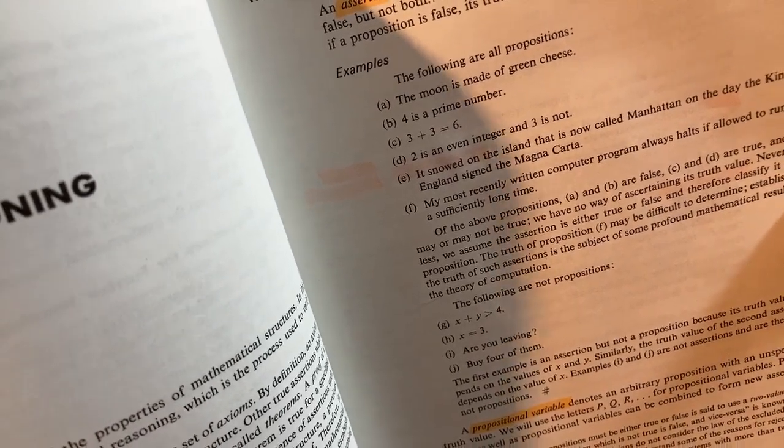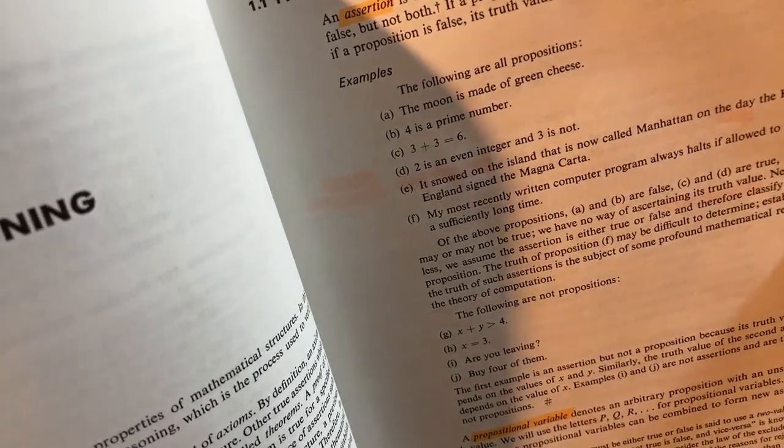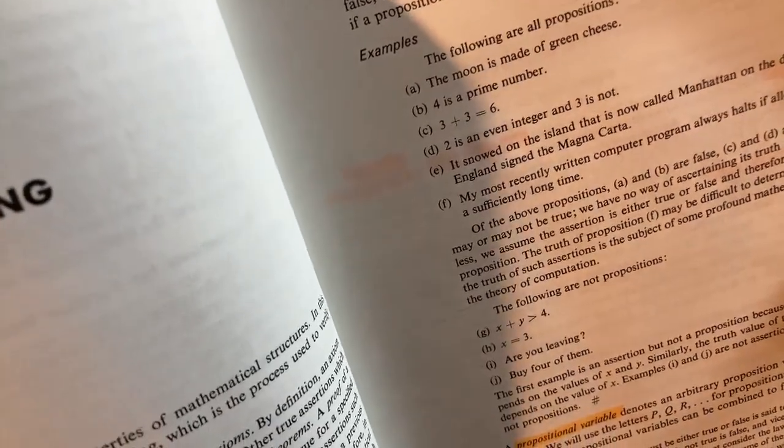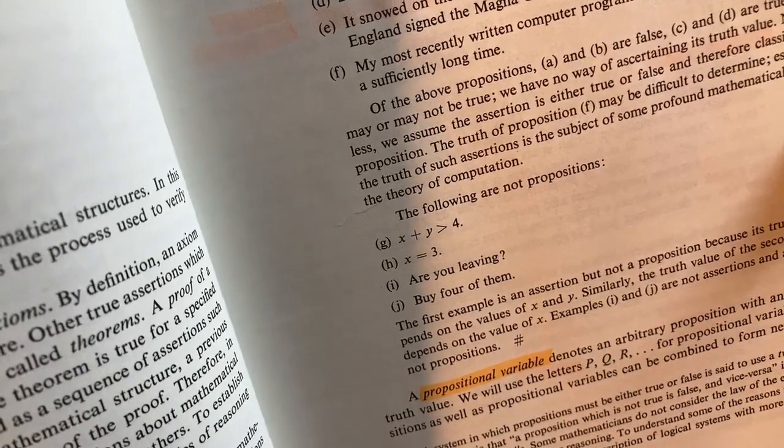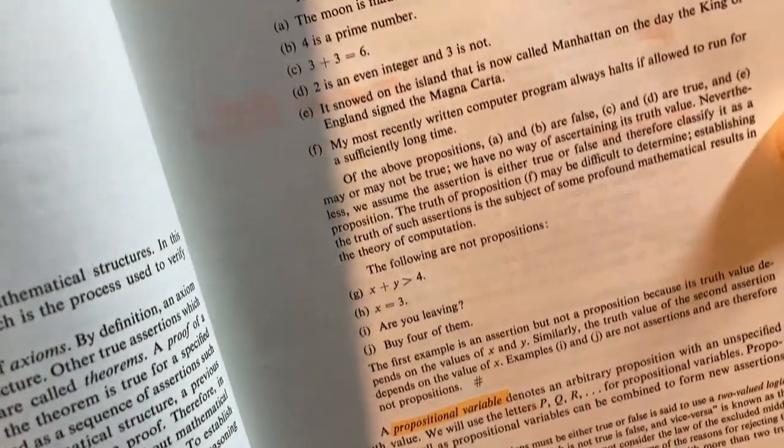The moon is made of green cheese. That would be true. No, I'm kidding. It's not made of green cheese. So everything is a true or false statement. And then here's things that are not propositions.